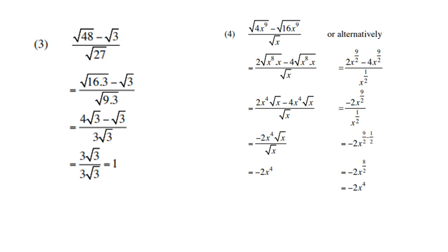Alternatively, you can use irrational exponents. Take note that the exponent becomes 9 over 2 — that's the square root, remember. The same with the other term: the exponent is also 9 over 2, and the bottom exponent is one half. You can use that approach to get the same answer. Check this out using a calculator.